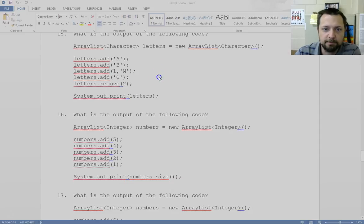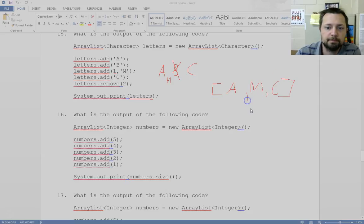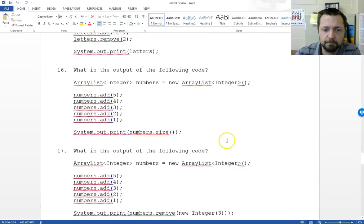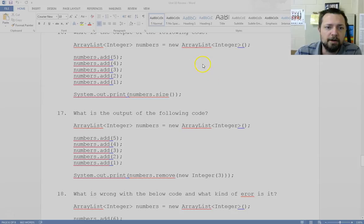Now we'll do some stuff that's a little more interesting. A, B. Go to position 1 and add an M. So now an M is going to be placed between both those. Then we put a C at the end. Then we remove value 2. 0, 1, 2. The B goes away. Then we print everything in letters. Bracket A, M, C with commas. On the test I'm going to count off if you don't put the brackets and the commas. That's what the toString does.